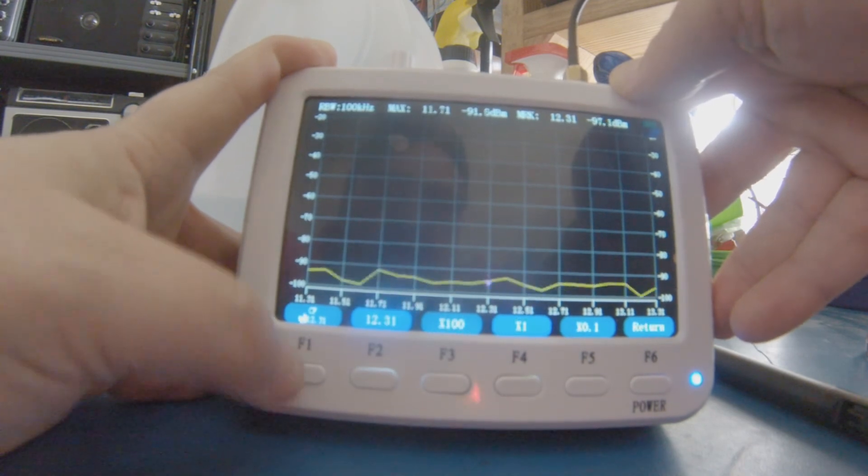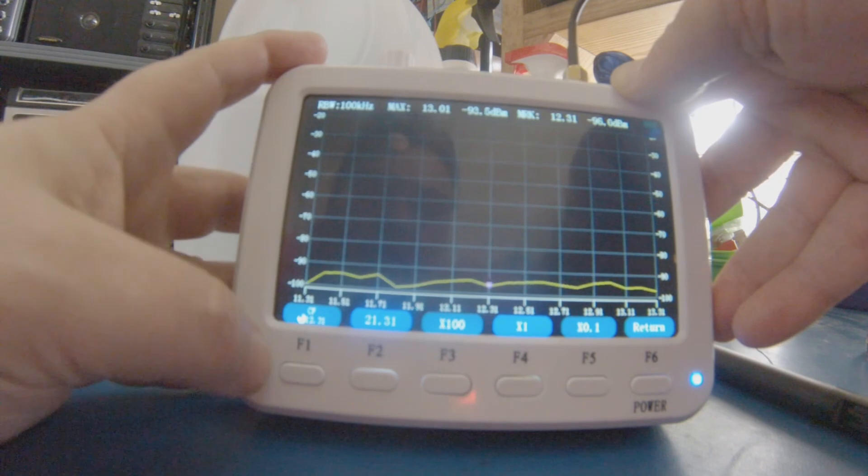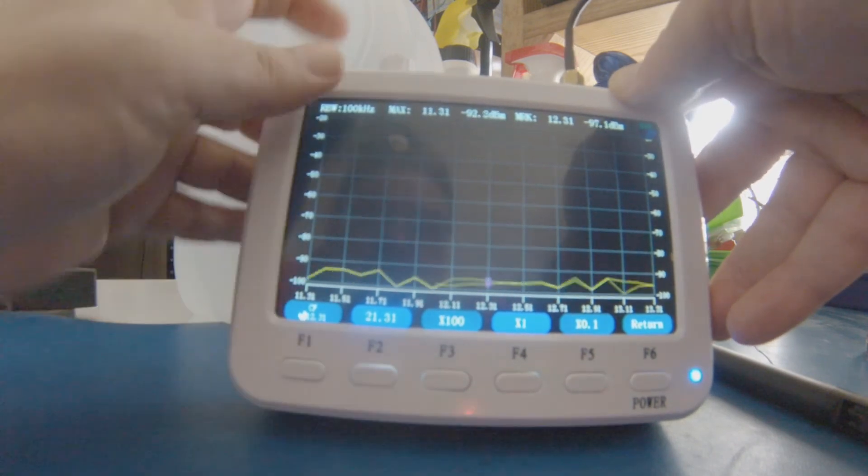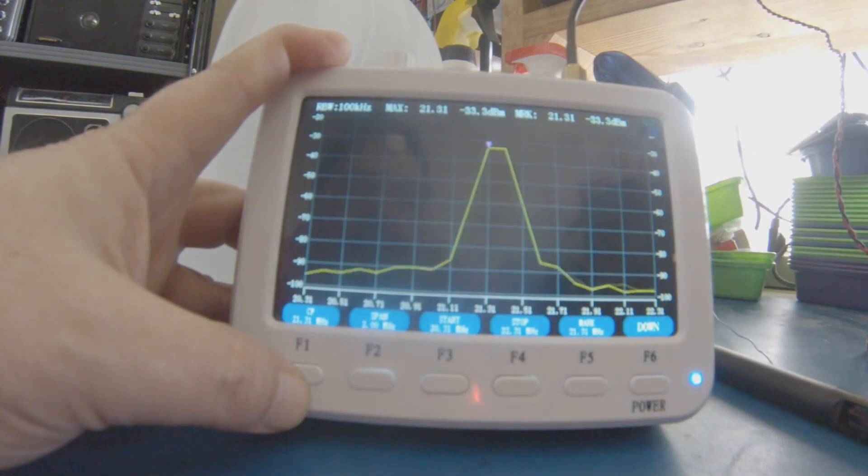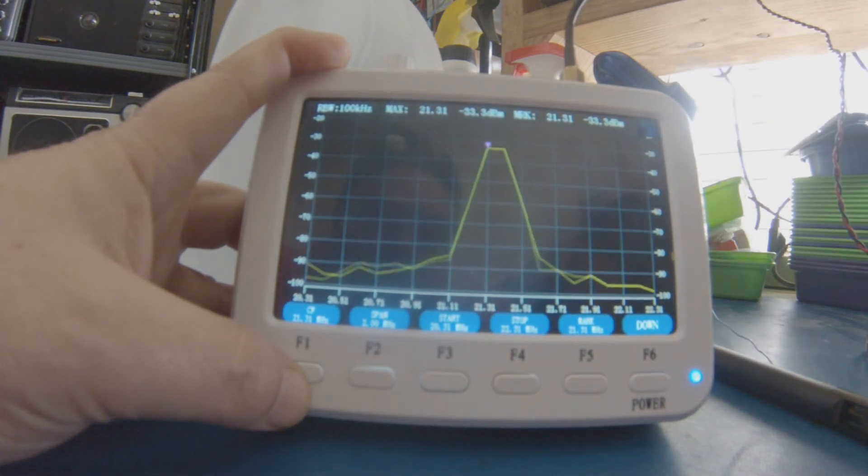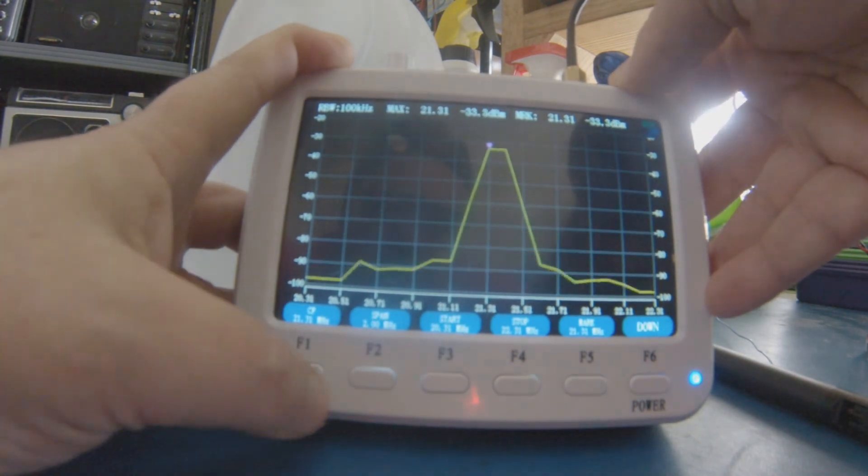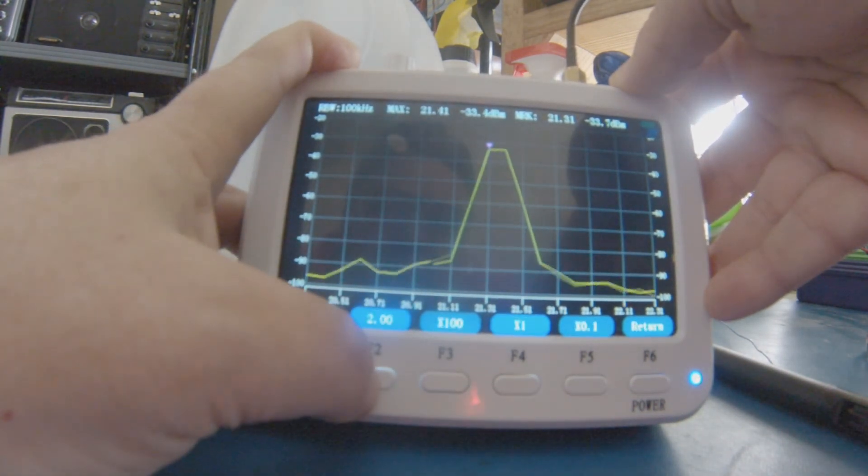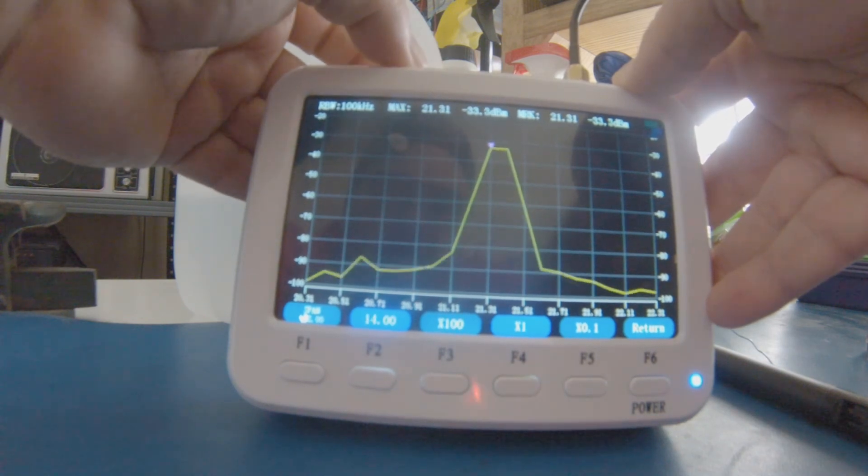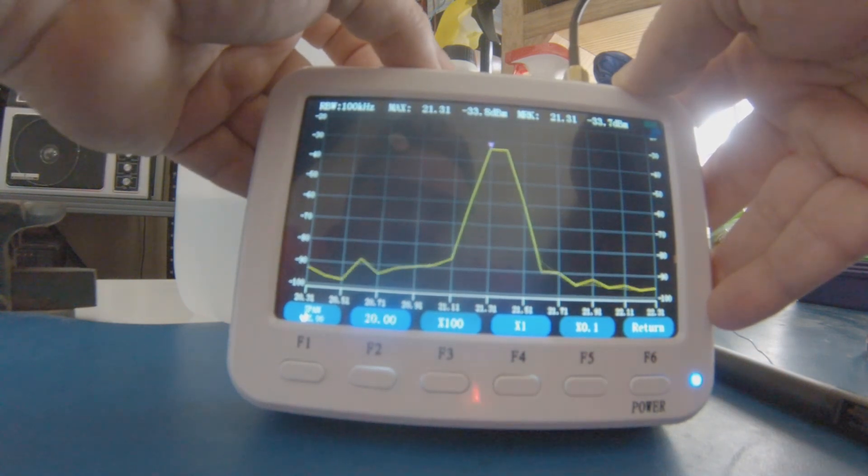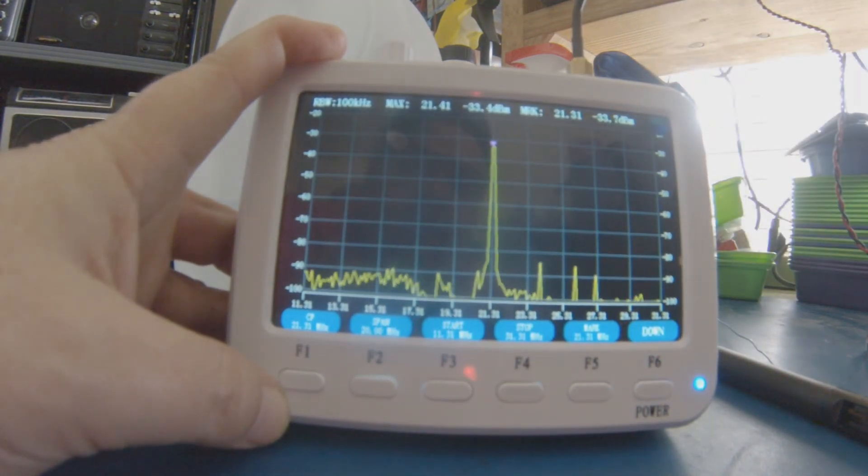I'm going back up to about 21 and hit the soft button. There's my peak, but my span is very narrow, so I don't have a lot of points of resolution on this. So I can go back to my span, make it back to 20 megahertz, and there's my peak back. It's pretty close to the marker again.